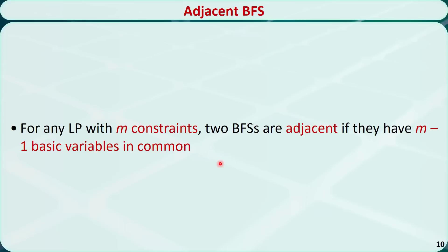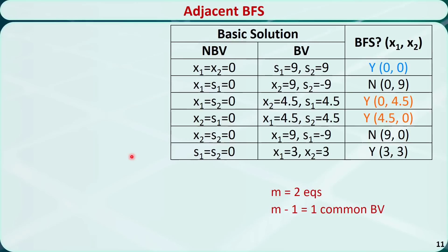Now I'll introduce another concept. For any linear programming problem with m constraints, two basic feasible solutions are adjacent if they have m-1 basic variables in common.